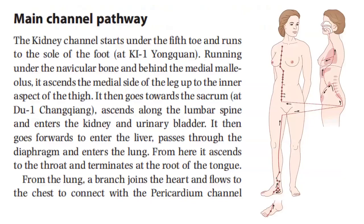As a review, the main channel pathway of the kidney channel starts under the fifth toe and runs to the sole of the foot at kidney 1. Running under the navicular bone and behind the medial malleolus, it ascends to the medial side of the leg up to the inner aspect of the thigh. It then goes towards the sacrum at Du 1, ascends along the lumbar spine, and enters the kidney and urinary bladder. It then goes forward to enter the liver, passes through the diaphragm, and enters the lung. From here, it ascends to the throat and terminates at the root of the tongue. From the lung, a branch joins the heart and flows to the chest to connect with the pericardium channel.